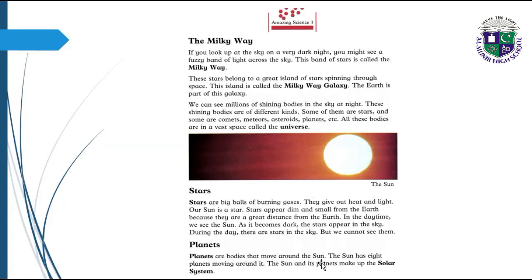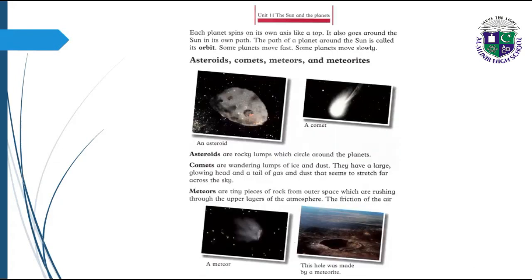Planets are bodies that move around the Sun. The Sun has eight planets moving around it. The Sun and its planets make up the solar system. Each planet spins on its own axis like a top. It also goes around the Sun in its own path. The path of a planet around the Sun is called its orbit. Some planets move fast, some planets move slowly.